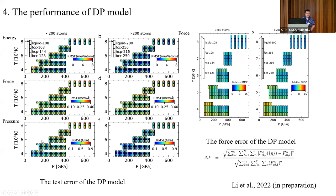We also consider finite size effects. For this we run a larger simulation cell — for example, for HCP iron we use 216 atoms. The performance is still consistent with the smaller cell, and the errors are consistent with the training dataset errors. The overall consistency suggests there is no underfitting or overfitting in the DP model. In the figure on the right I show the normalized force error, which measures the force difference between the DP model and DFT divided by the absolute value of the force. For all conditions and all phases, the relative force error is below 10%.